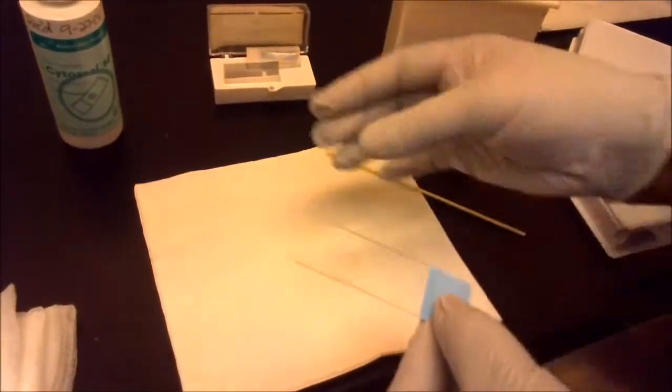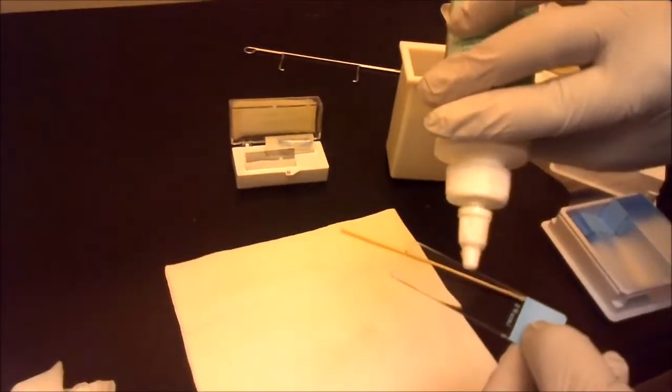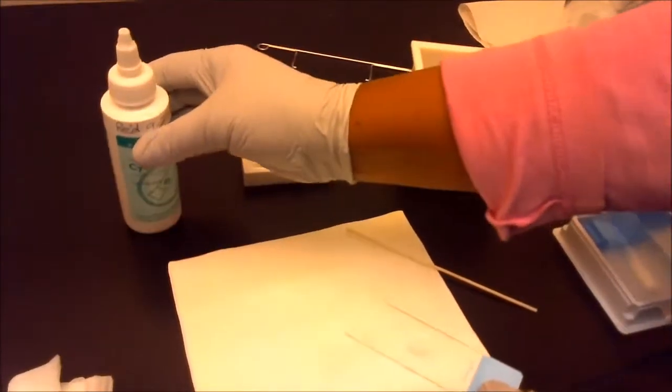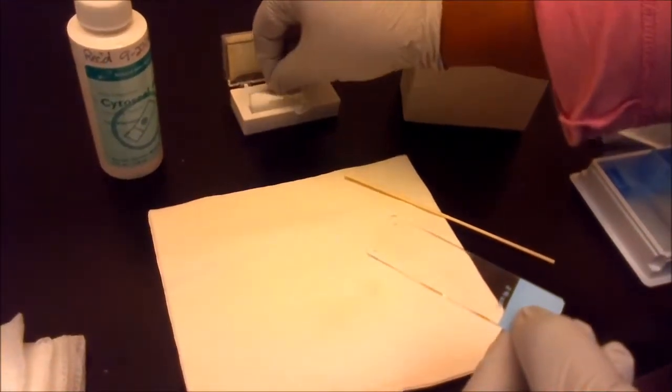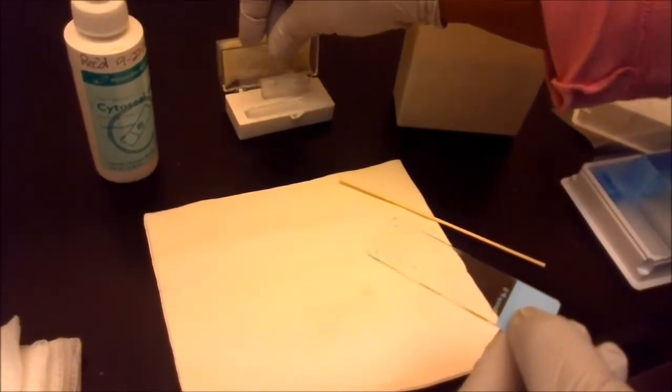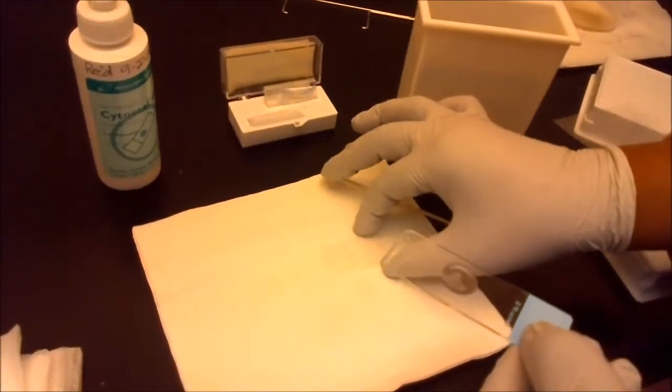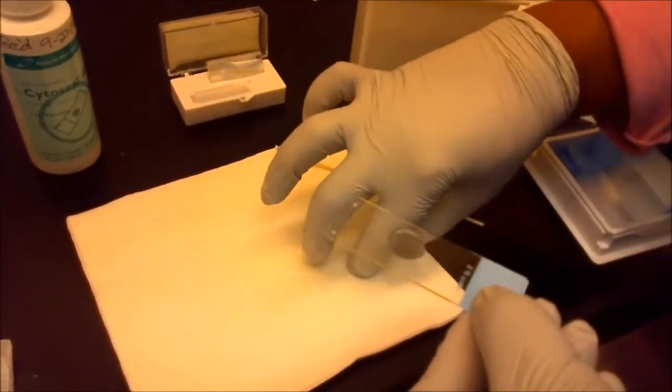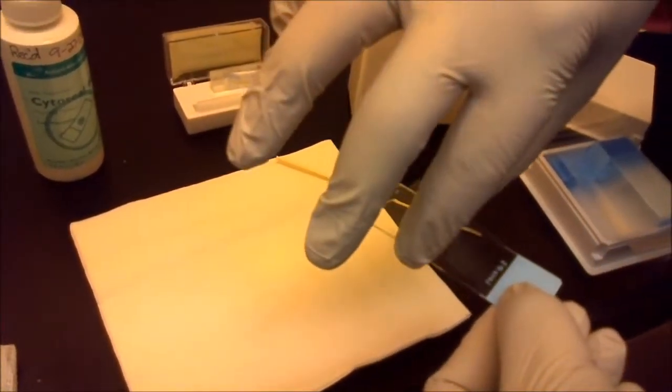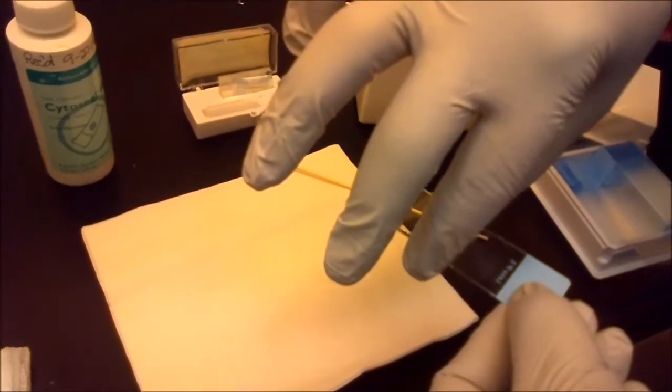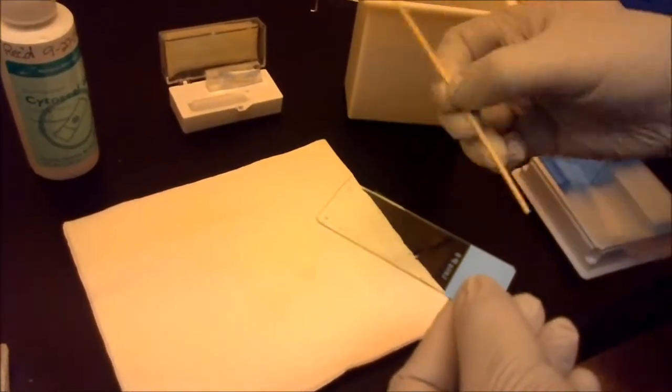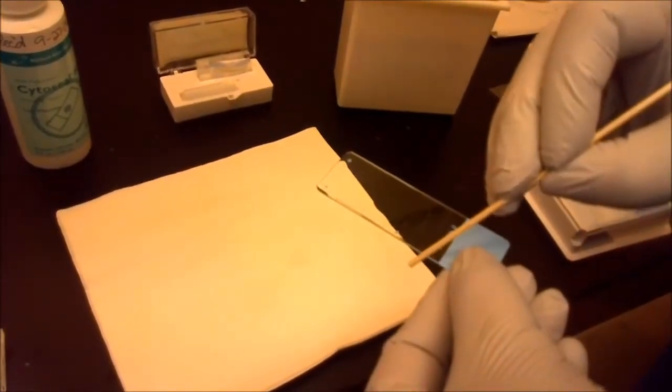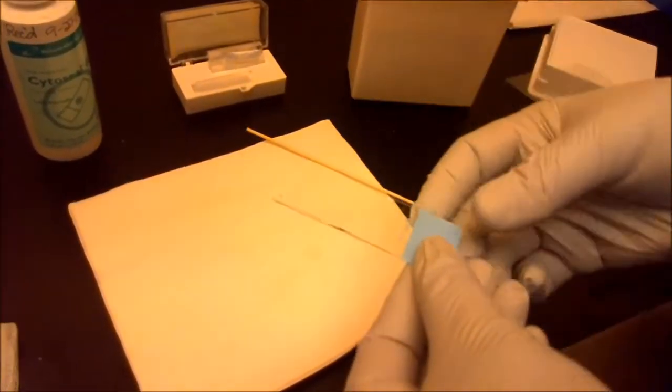This is another example—a second technique of coverslipping, where you put the mounting media on the slide, as you can see. Make sure there are no bubbles, then you put the cover glass on and align it so that it covers the tissue.